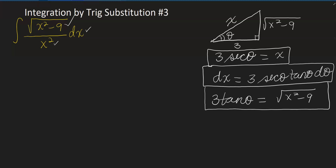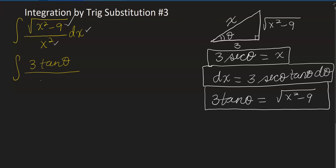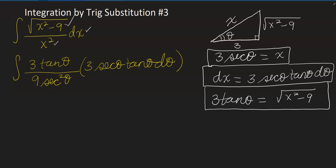Going back and rewriting the integral: the square root of x² minus 9 becomes 3 tangent theta; x² becomes 9 secant squared theta; and dx becomes 3 secant theta tangent theta dθ. So 3 times 3 is 9, which cancels with the 9 in the denominator, and one factor of secant squared cancels as well.